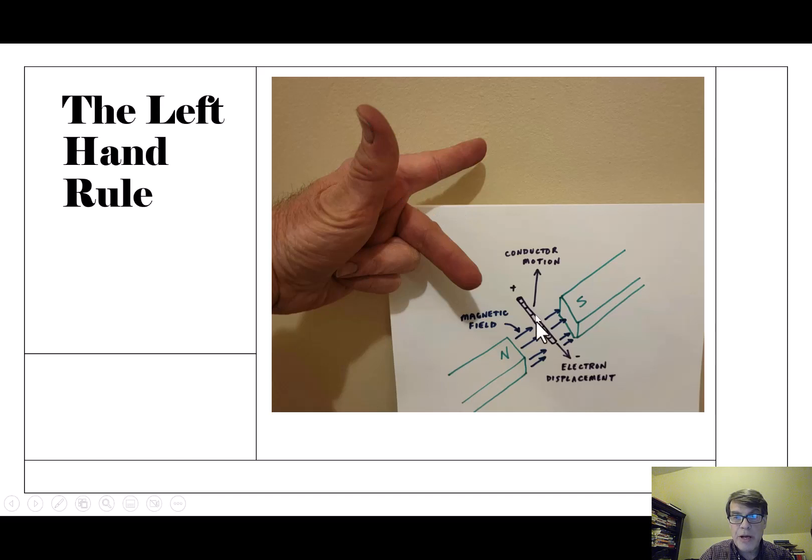And then your thumb goes in the direction that the conductor is going. So remember, the conductor is going up, and so my thumb is going up. And so then your second finger tells you which directions the electron, which direction the electrons are going to flow. And the electrons are displaced in this direction. That's the left-hand rule.